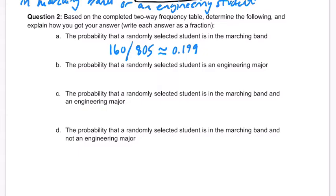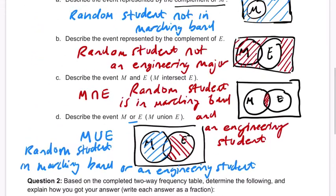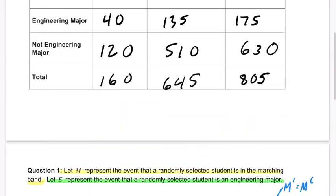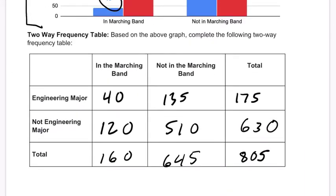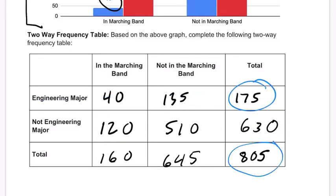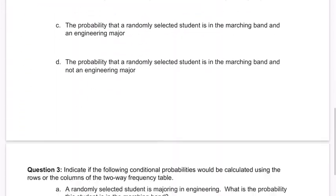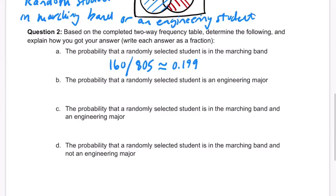The probability that a randomly selected student is an engineering major — same idea. We look along the engineering major row: there are 175 engineering majors out of 805 total. That's about 0.217.